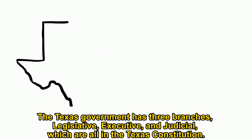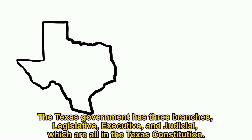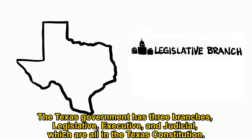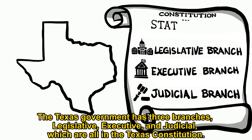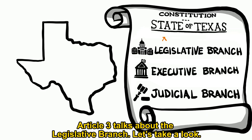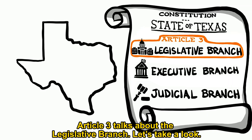The Texas government has three branches: legislative, executive, and judicial, which are all in the Texas Constitution. Article 3 talks about the legislative branch. Let's take a look.